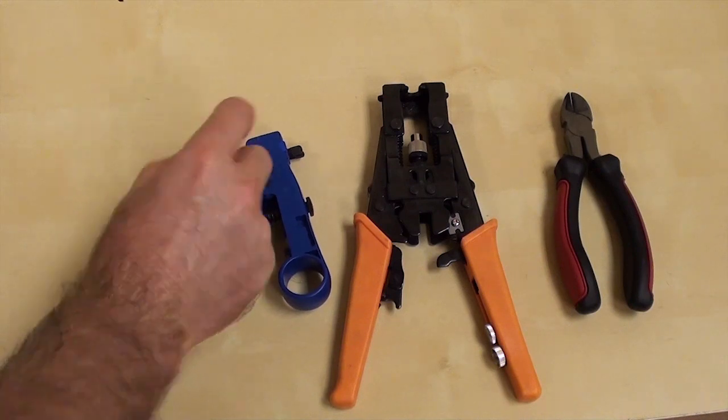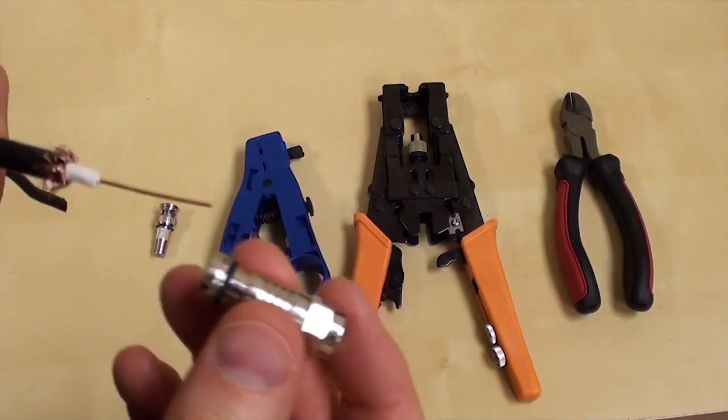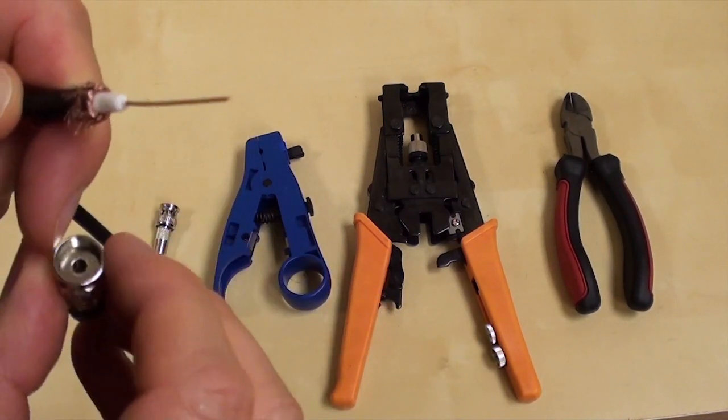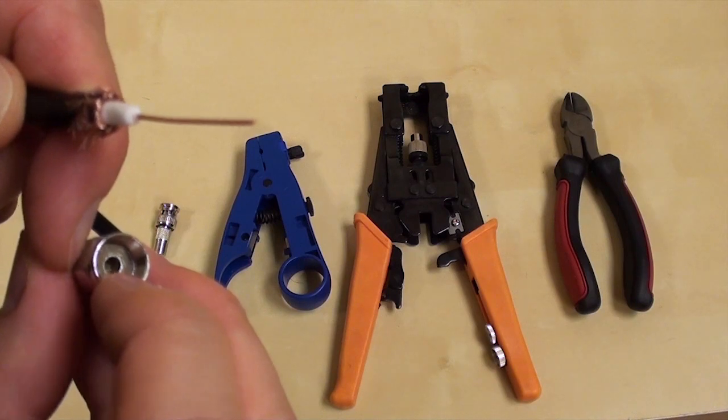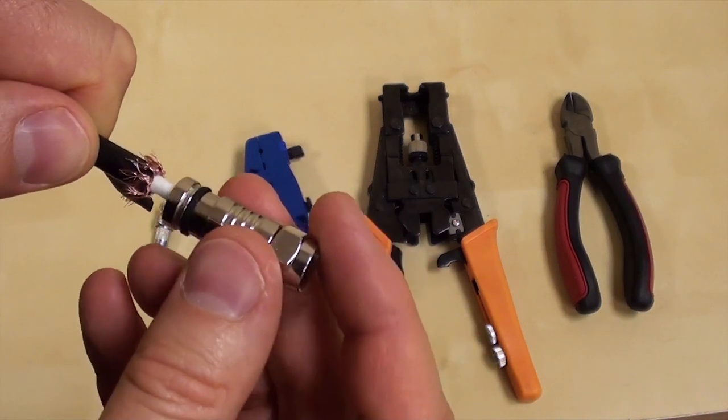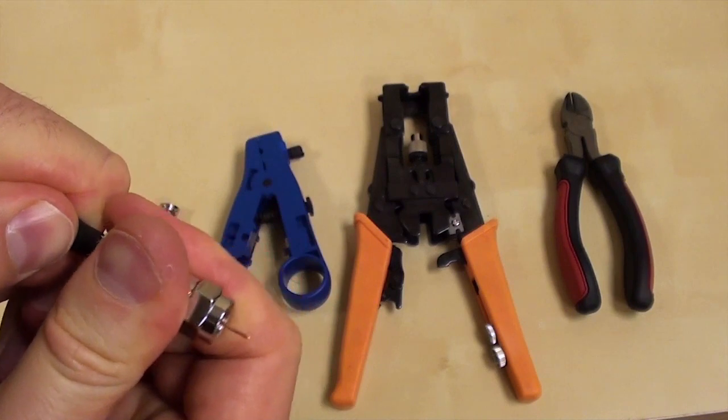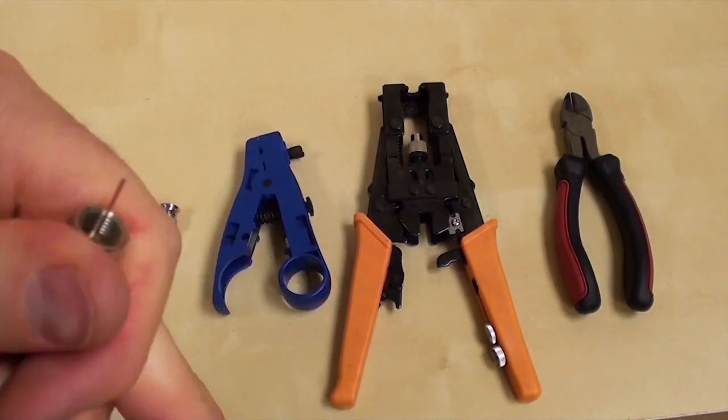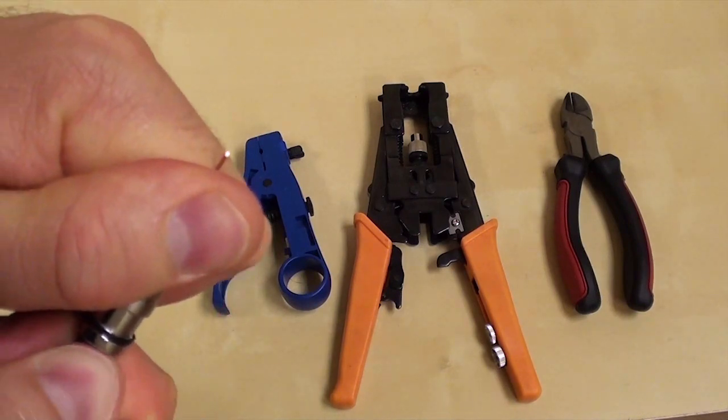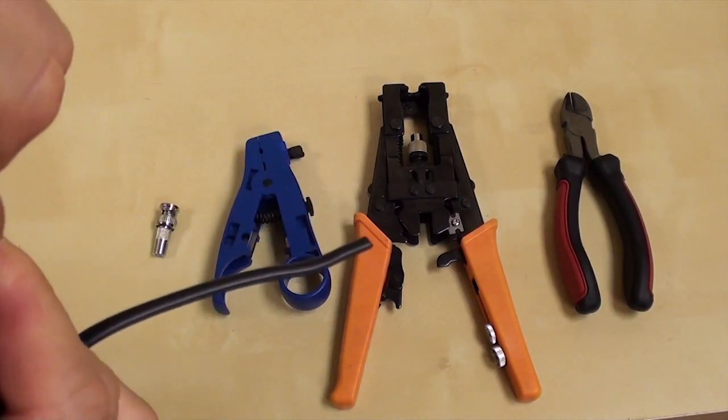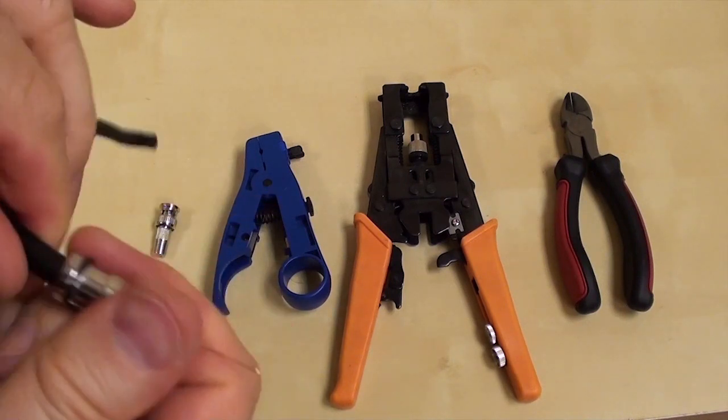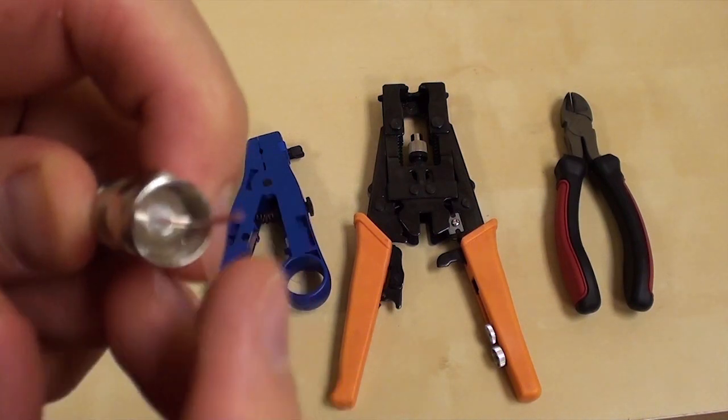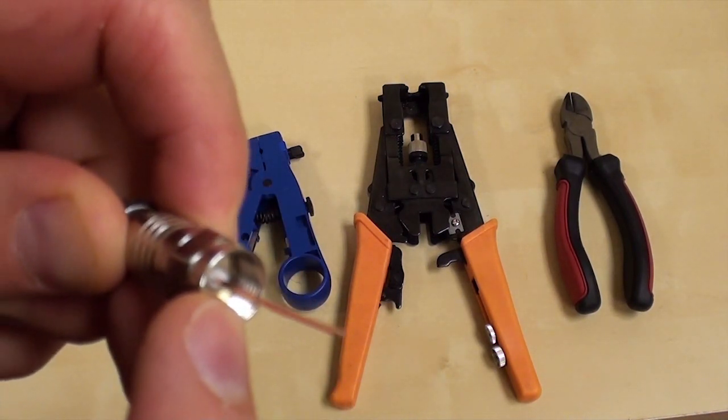Next, take the compression F connector and place it on the cable. You need to be sure that the connector is placed all the way on the cable so that the white insulator comes slightly through the hole in the connector. Sometimes it takes a little twisting to make sure the connector is seated all the way on the cable. There we can see the insulator.